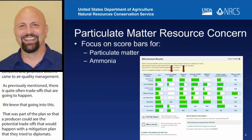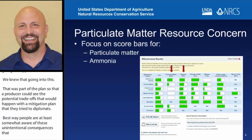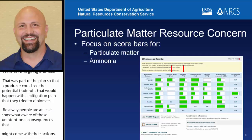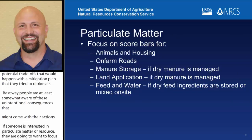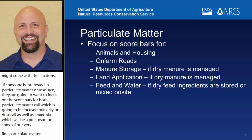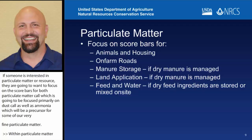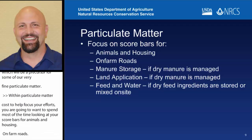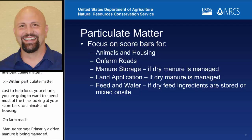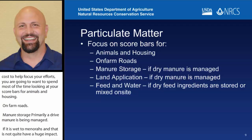If somebody is interested in particulate matter, they're going to want to focus on the score bars for both particulate matter — focused primarily on dust — as well as ammonia, which is a precursor for some of our very fine particulate matter. Within particulate matter, to help focus your efforts, you're going to want to spend most of the time looking at your score bars for animals and housing, on-farm roads, manure storage — primarily if dry manure is what's being managed — land application again if dry manure is being managed, and then feed and water, but only if dry feed ingredients are either stored or mixed on site.